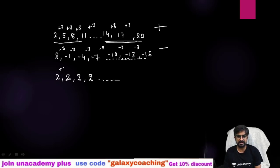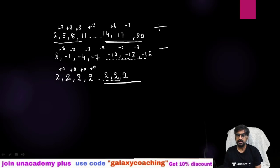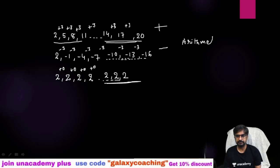Progress can also be zero. For example, 2, 2, 2, 2 — you are getting a progress of 0 each time. The next three terms of this AP will all be 2. So any sequence having the same progress is called arithmetic progression. The progress can be positive, negative, or zero.